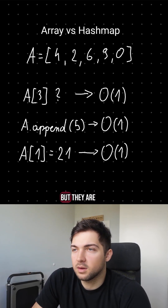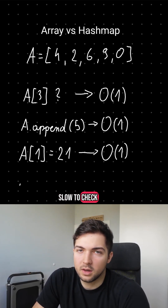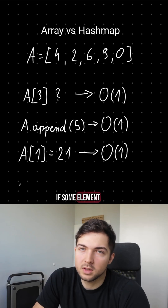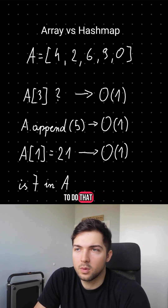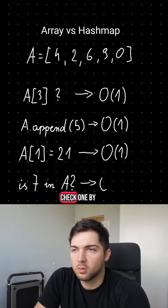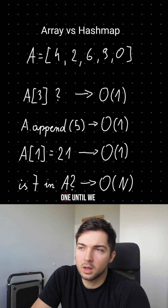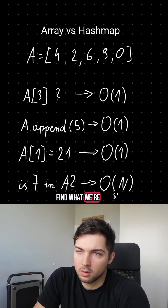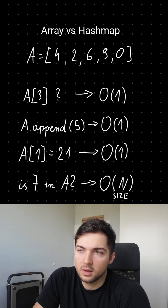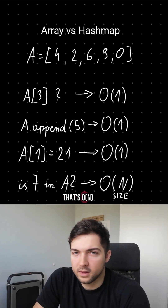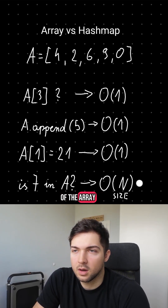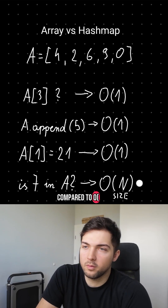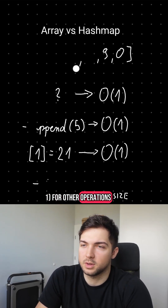But they are slow to check if some element is already present in the array. To do that, we have to check one by one until we find what we are looking for. That's O(n) time complexity, n being the size of the array, compared to O(1) for other operations.